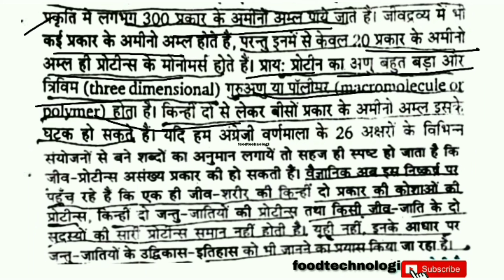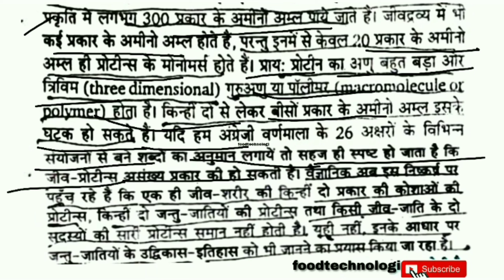Proteins are 3D polymers made up of amino acids in separate phases. If we put it in 26 English words, the human body can only synthesize two types of amino acids on its own — the rest must come from diet.